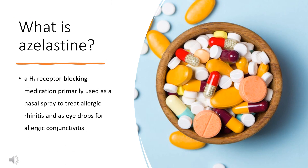Azelastine, sold under the brand name Optivar among others, is a H1-receptor-blocking medication primarily used as a nasal spray to treat allergic rhinitis and as eye drops for allergic conjunctivitis. Other uses may include asthma and skin rashes, for which it is taken by mouth. Azelastine was patented in 1971 and came into medical use in 1986. It is available as a generic medication in the United States.